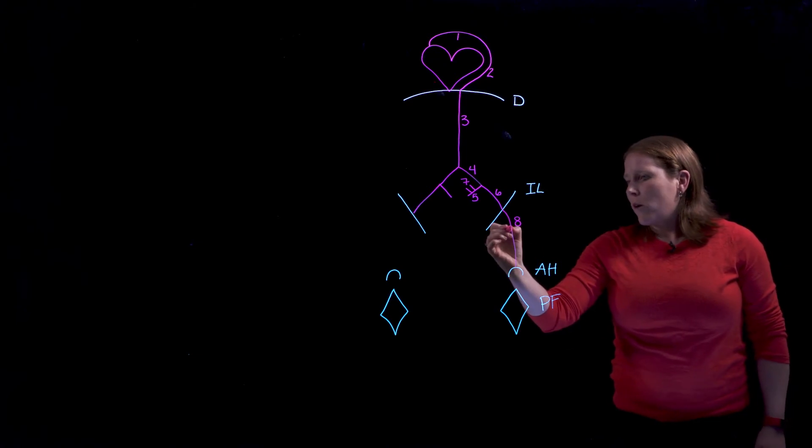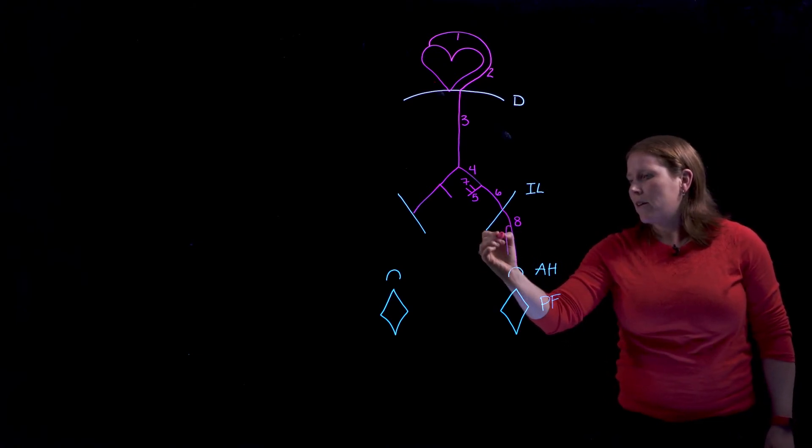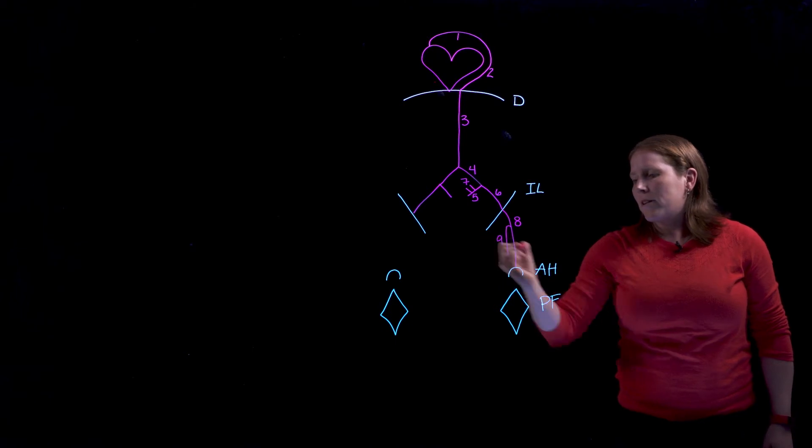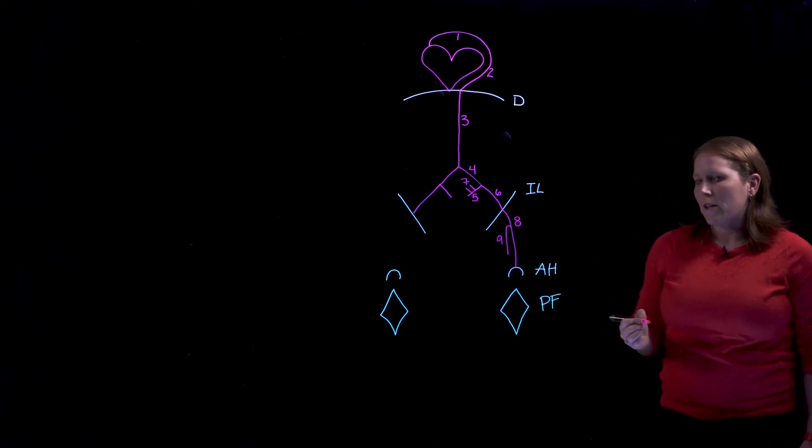The femoral artery has one large branch in the anterior thigh and this is called profunda femoris or the deep branch of the femoral artery.